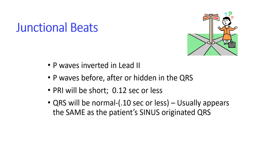To review: for junctional beats in lead II, P waves are inverted and may appear before, after, or hidden in the QRS. The PR interval is short — 0.12 seconds or less. The QRS is normal, 0.10 seconds or less, because the impulse originates in the atrium and goes down the bundles of His simultaneously, depolarizing the ventricles at the same time and producing a normal QRS.